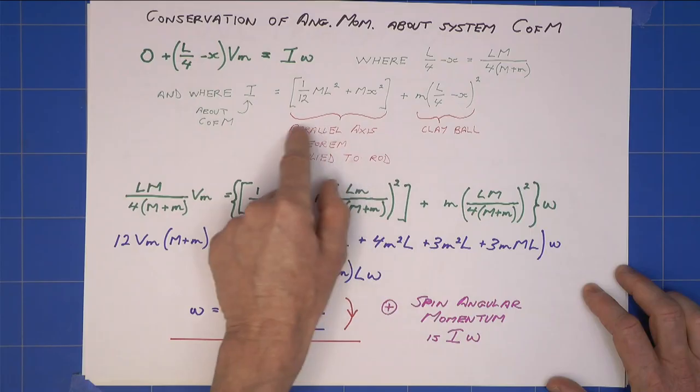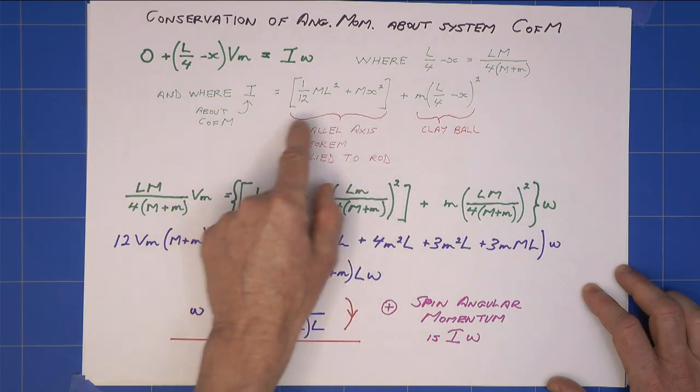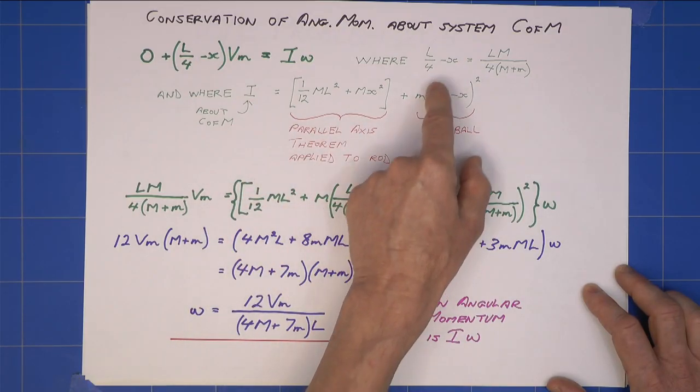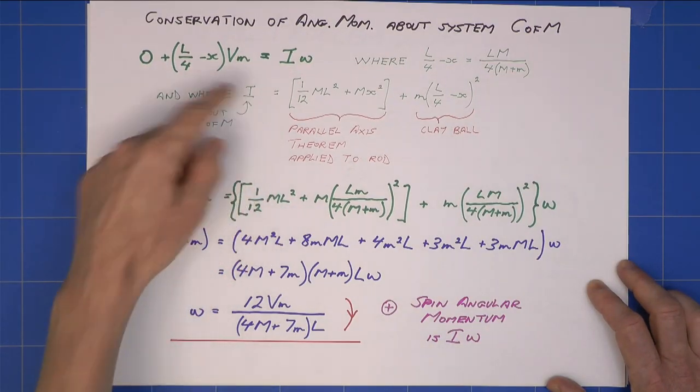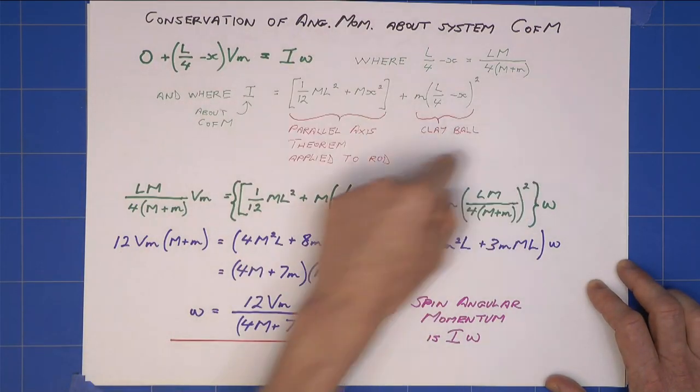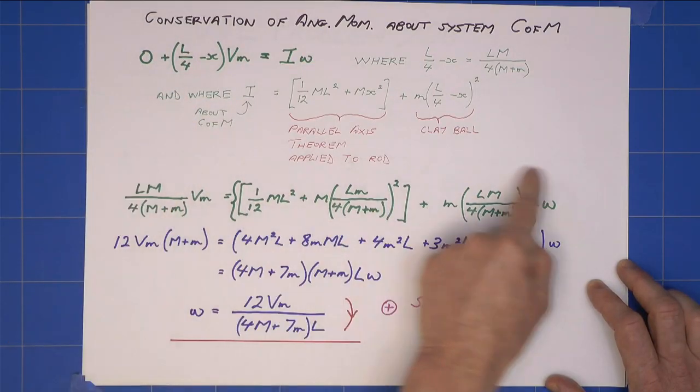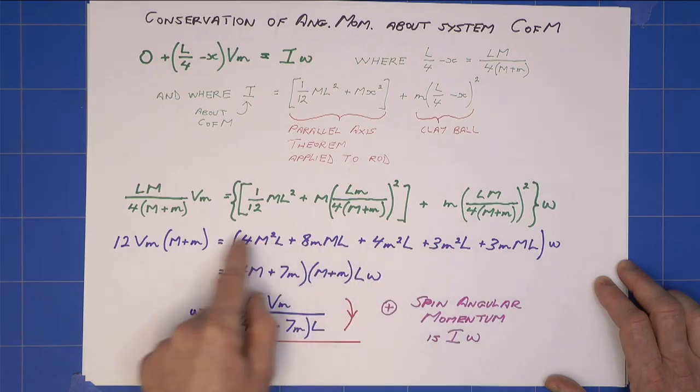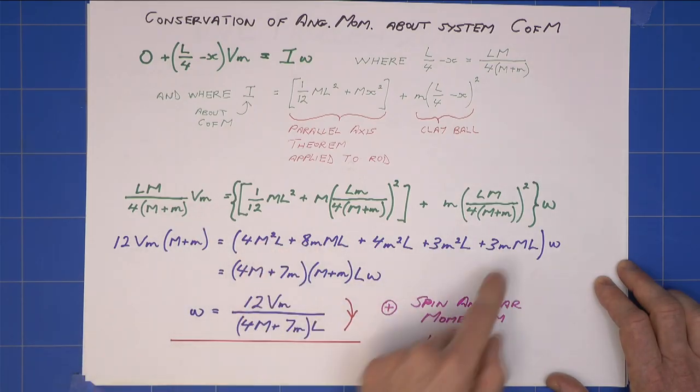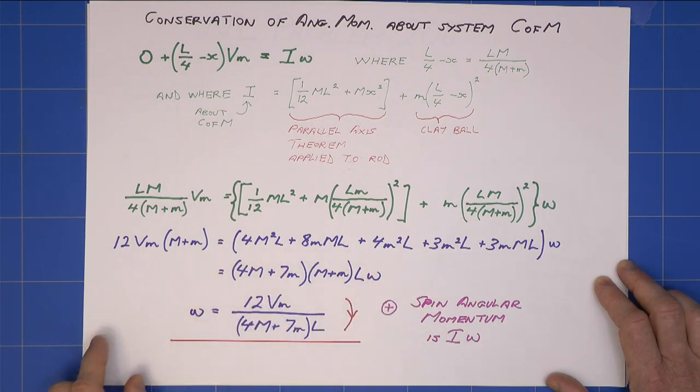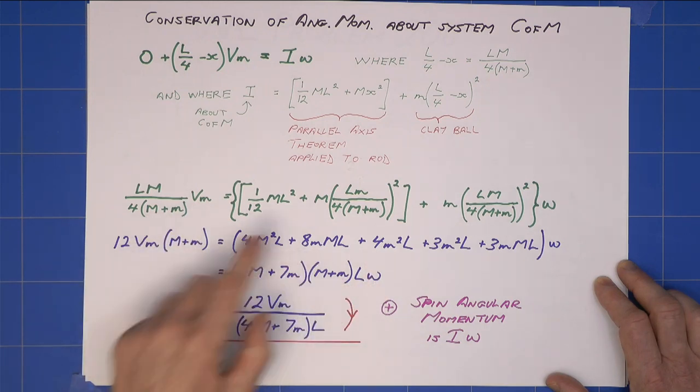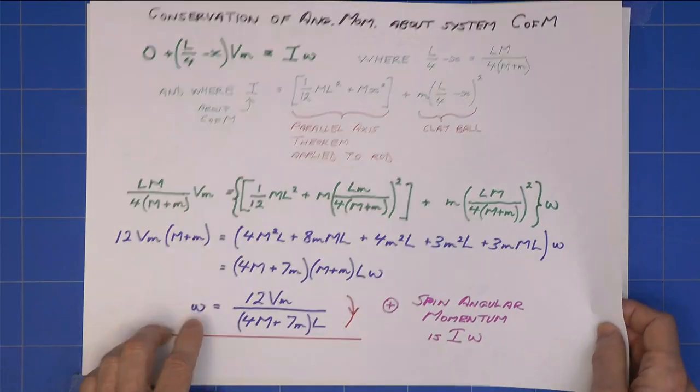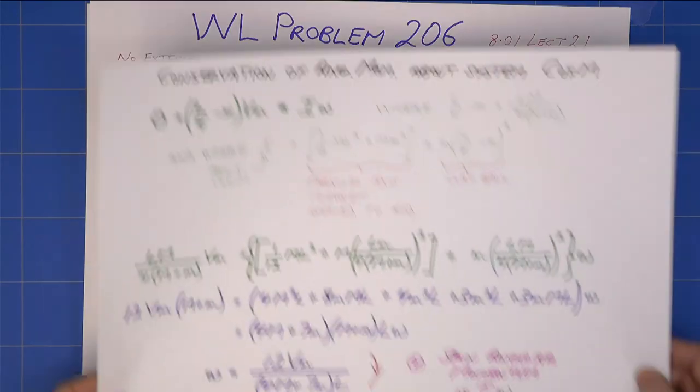So, I know L over 4 minus x equals that. I use the parallel axis theorem on the rod. And I also consider the contribution of the clay ball, which gives me the value of I. I combine all this together and I get that expression here, which I can simplify. I can expand out, cancel a few terms. I then collect the terms and I get that expression here. I can clearly divide by m plus M, which is always going to be greater than zero. And I get omega, which is that about the centre of mass of the system.